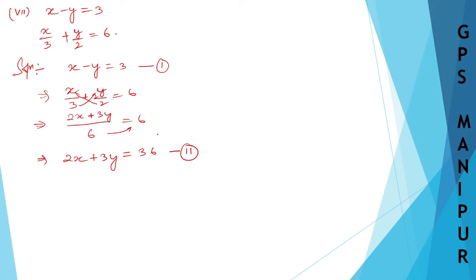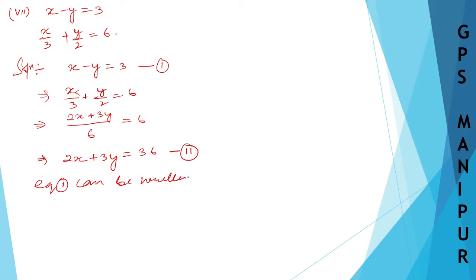So 2x plus 3y equals 6 multiplied by 6, which is 36. This is equation number 2. Now, equation number 1, which is x minus y equals 3, can be rewritten.